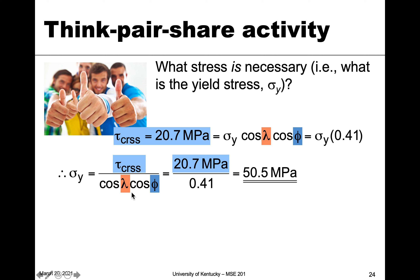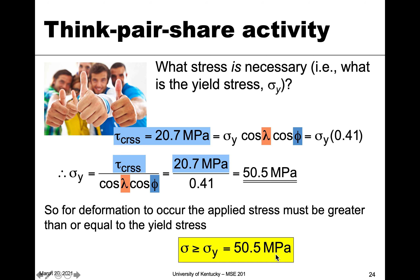Rearranging the expression, critical resolved shear stress over the cosine factor gives us 20.7 divided by 0.41. That means we'd have to apply 50.4 megapascals of tensile stress to initiate slip in that slip system. This value or higher will cause slip to occur, and therefore 50.4 megapascals is the yield strength for this particular slip system and material. That's what we're using the concept of resolved shear stress for — to see when slip will occur at what stresses and forces.